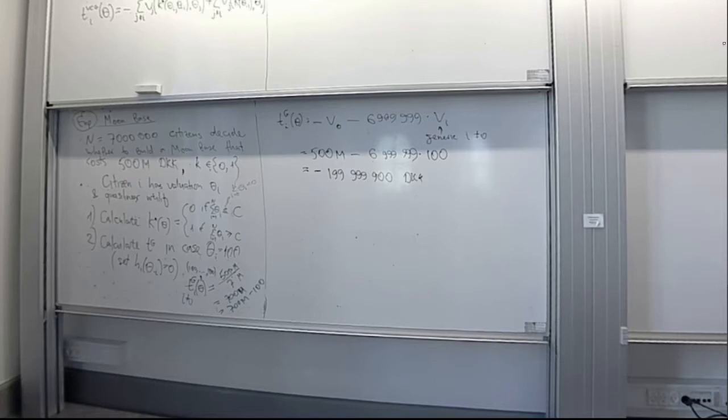We start by solving the moon base example assigned just after the break. The first thing we need is to calculate the efficient allocation k*. This looks quite trivial: denoting zero as not building and one as building, k* of theta equals one if the sum of all citizens' valuations is above c, and zero if the sum is below the cost — the 500 million benchmark.